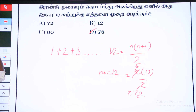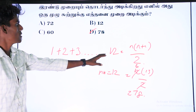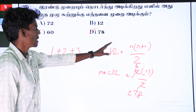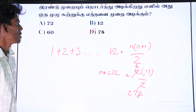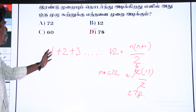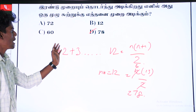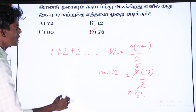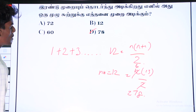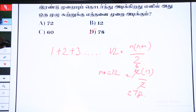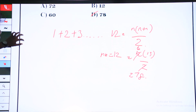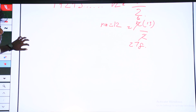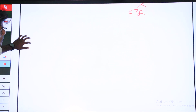Let's look at the previous slide. The formula is the same formula: n into n plus 1 by 2. We can add 1, 2, 3. This is equal to 78.